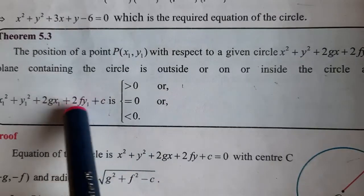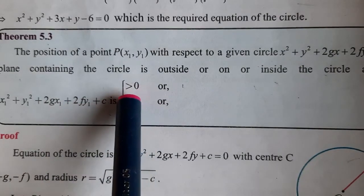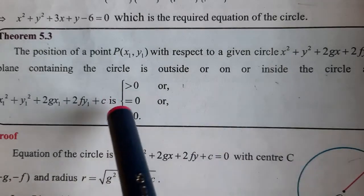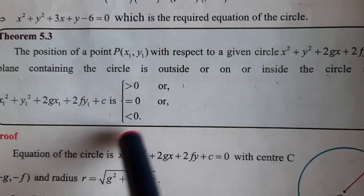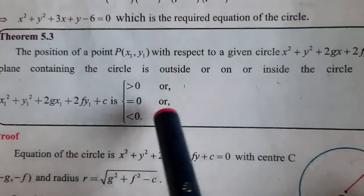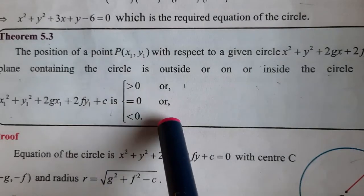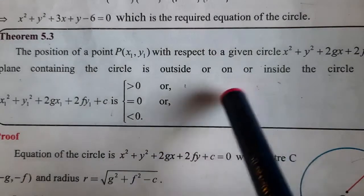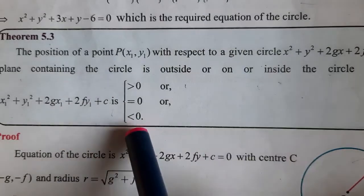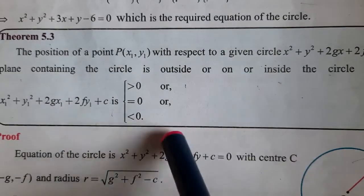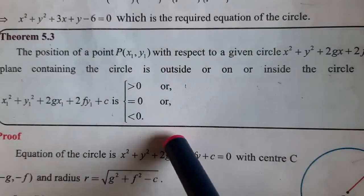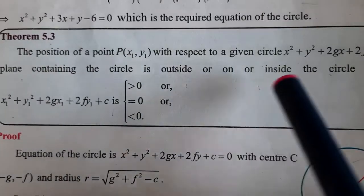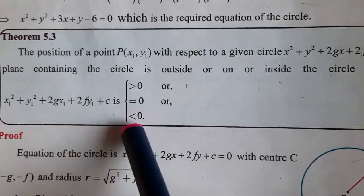Suppose the radius value is greater than 0 — the point is outside the circle. If radius is equal to 0, the point is on the circle. And if the radius comparison gives less than 0, the point is inside the circle.